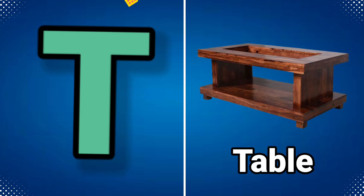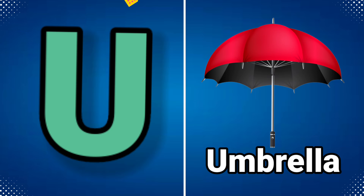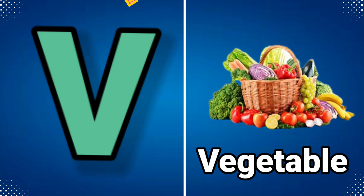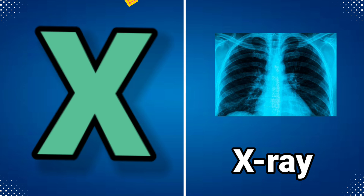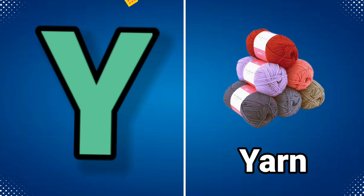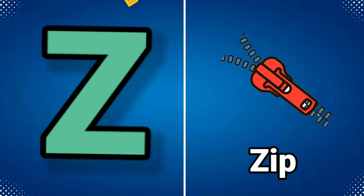T for table, U for umbrella, V for vegetable, W for watch, X for x-ray, Y for yarn, Z for jeep.